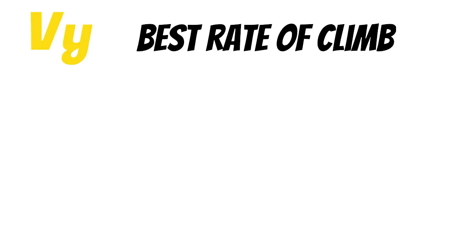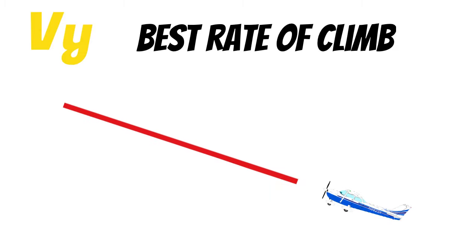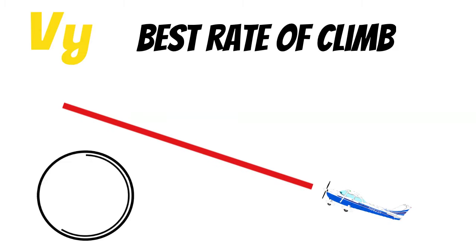Next is VY. This is the best rate of climb. VY gives you the most altitude in the shortest amount of time. Unless you need to clear an obstacle, we typically climb out at VY. I don't have a memory aid for this one — if you do, post it in the comments below so you can help someone else out.